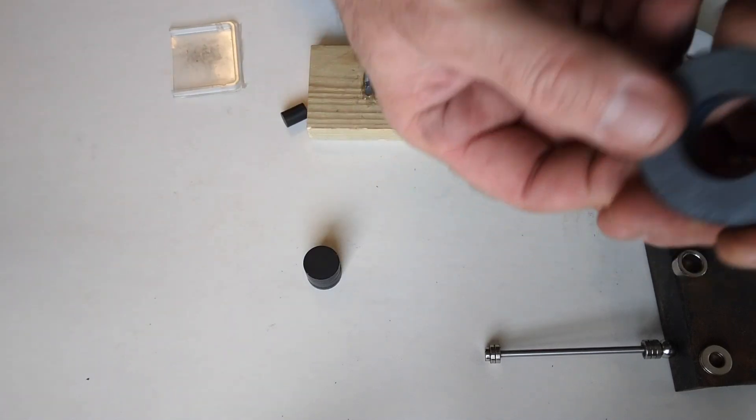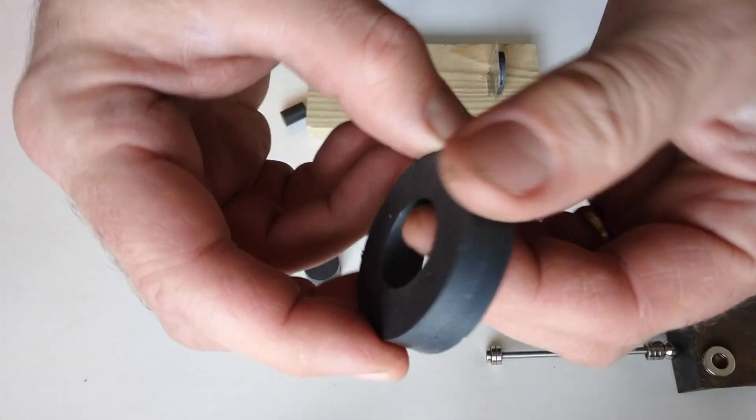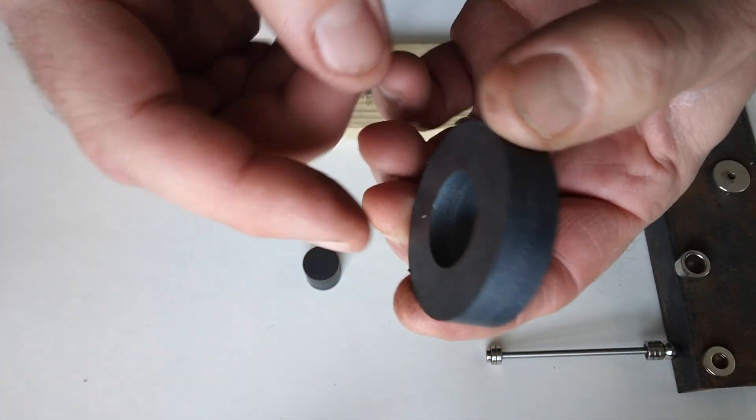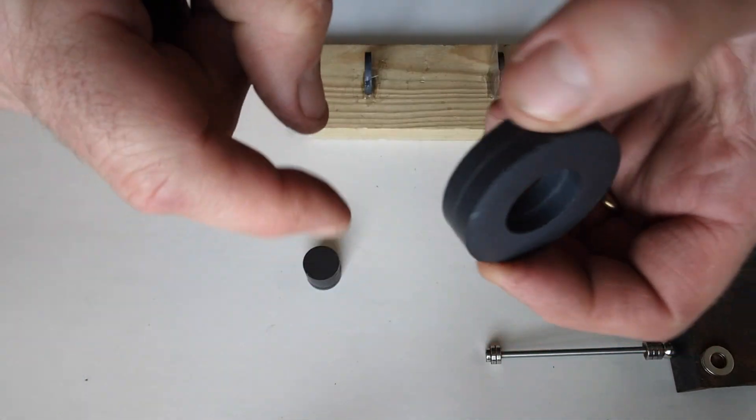This is a ring magnet, a ceramic ring magnet. Actually there's two stuck together and it's magnetized with one pole on one face and another one on the other face.